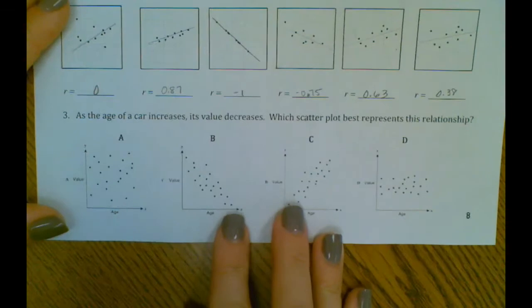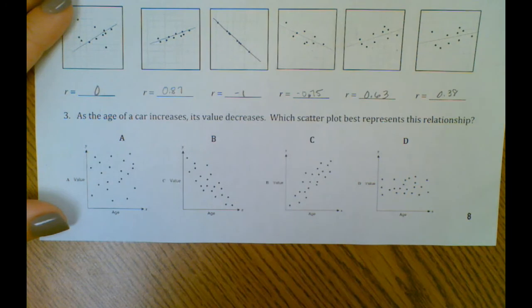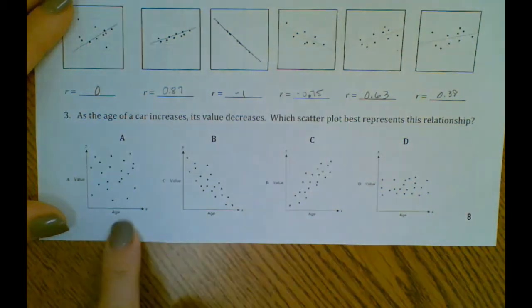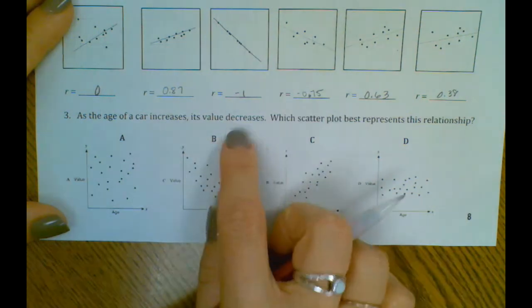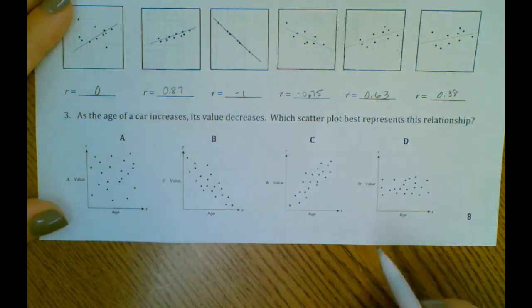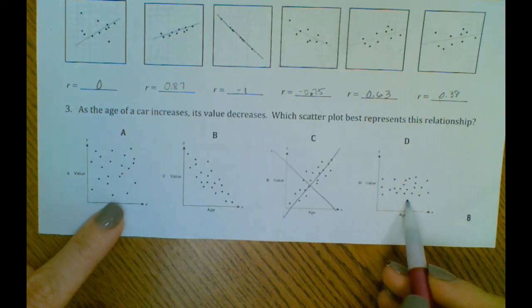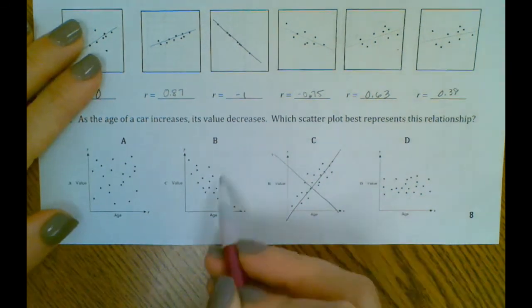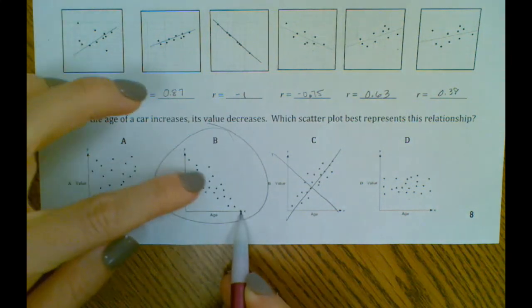Okay, and then on number three it says as the age of a car increases, its value decreases. Which scatterplot best represents the relationship? So if you look here, it says as the age increases, so as this goes up, as the age goes up, it gets bigger. The value needs to come down. So we know it's not going to be this one because that's positive. These two here, there's no really great indication of if they're positive or negative. But this guy right here makes sense, right? The bigger the, or the older the car, the less the value.